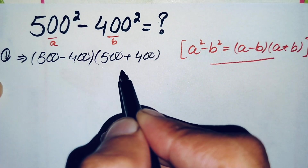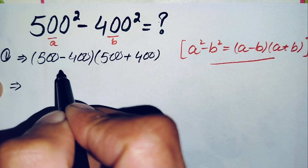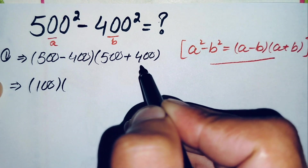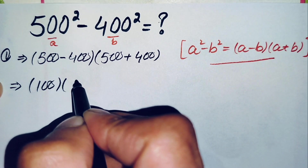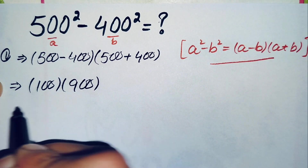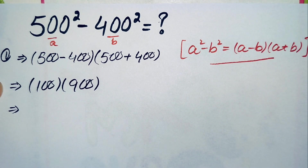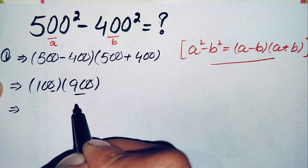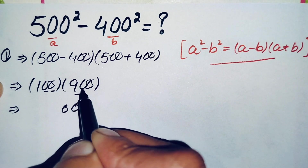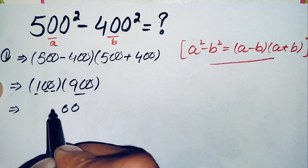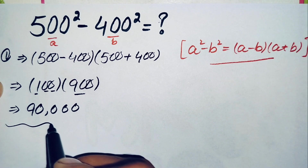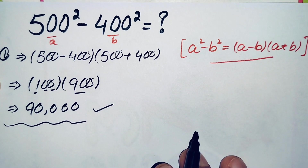So 500 minus 400 gives 100, and 500 plus 400 gives 900. Multiplying these two numbers: 900 times 100 gives 90,000. So 90,000 is our answer using the first method.